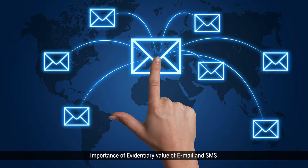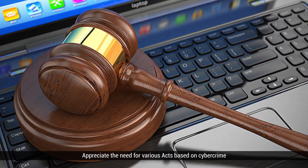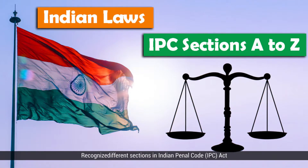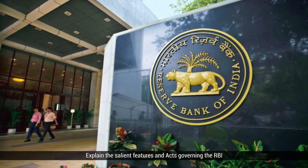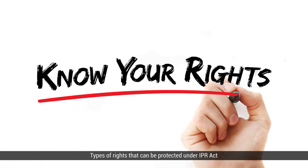At the end of the 15th week, learners will be able to: realize the importance of evidentiary values of email and SMS while dealing with cyber frauds, scams and related offenses; appreciate the need for various acts based on cyber crime; recognize the different sections in the Indian Penal Code Act; explain the salient features and acts governing the RBI Act; define Intellectual Property Rights Act in India; and list different types of rights that can be protected under the IPR Act.